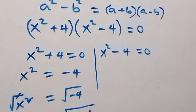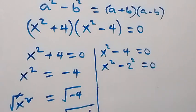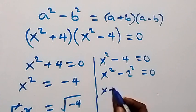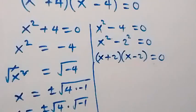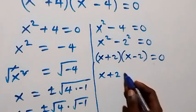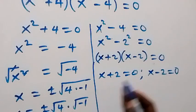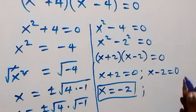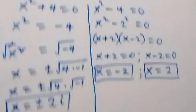From the other side, for x squared minus 4, we apply the perfect square again with x serving as a and 2 serving as b. So we have x plus 2 multiplied by x minus 2 equals zero. This gives x plus 2 equals zero or x minus 2 equals zero. So x equals minus 2 or x equals 2.